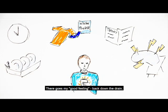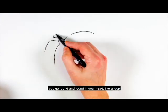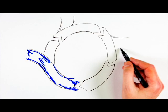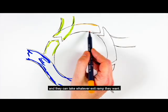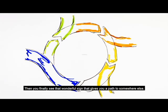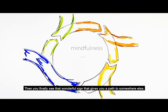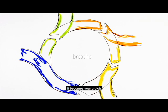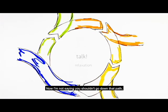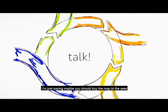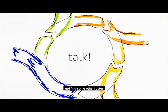Think of it like a massive roundabout. You go round and round in your head like a loop and you can't find a way off. You think everybody else has got it figured out and they can take whatever exit ramp they want. Then you finally see that wonderful sign that gives you a path to somewhere else, and that becomes your go-to. It becomes your crutch. Now I'm not saying you shouldn't go down that path. I'm just saying maybe you should buy the map to the area and find some other routes.